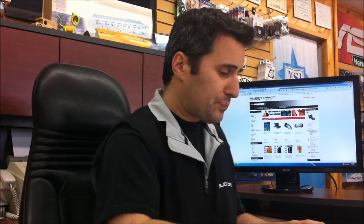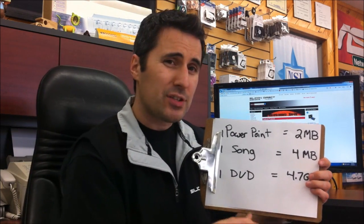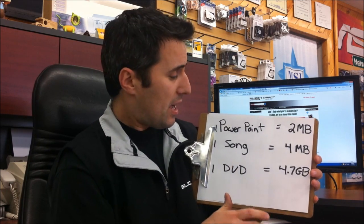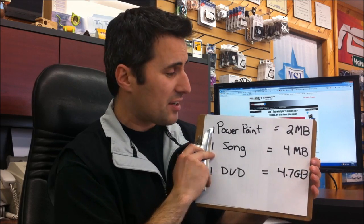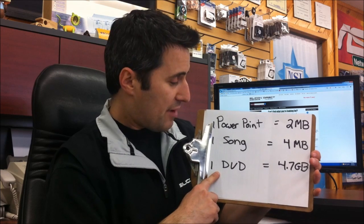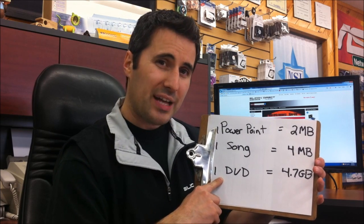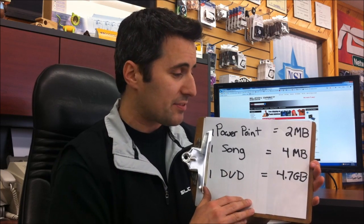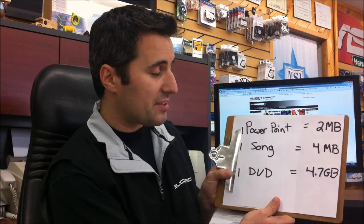Just to give you an understanding of what some of these actually mean — how much storage can you put in a megabyte, gigabyte, or terabyte? A basic PowerPoint presentation today averages around 2 megabytes — some pictures, a little bit of music. A downloaded song is on average 3 to 4 megabytes. If you get a DVD at the store, that DVD disc has a capacity of around 4.7 gigabytes — though the movie may not always fill it completely.